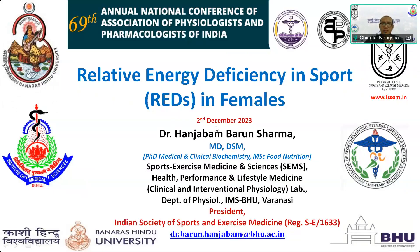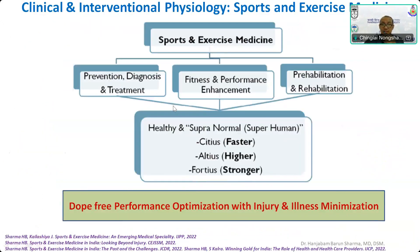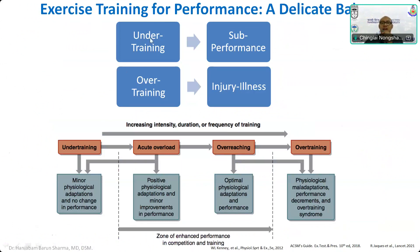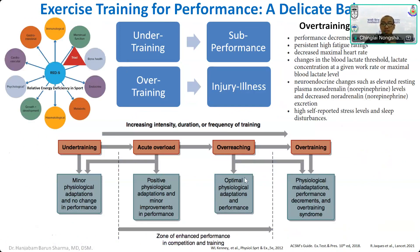Thank you for giving me this opportunity. Let's begin the talk. Sports and exercise medicine is one of the sub-specialties of clinical interventional medicine with the primary purpose of faster, higher, stronger — that is, drug-free performance optimization with minimizing injury and illness. That's why sports and exercise training has to be done in a very scientific way, because under-training will lead to sub-performance, whereas overtraining is associated with abnormal effects. That's why we have to target the zone where optimum physiological adaptation or supercompensation happens.